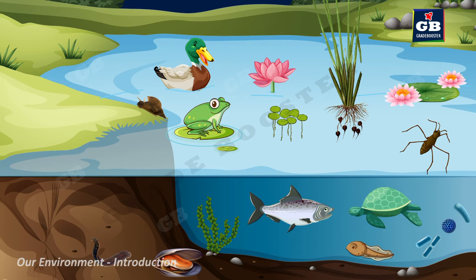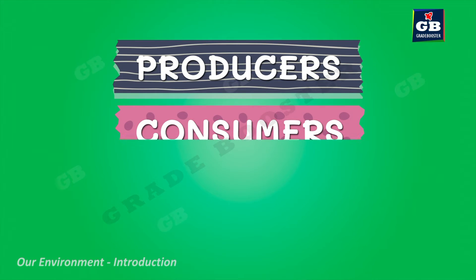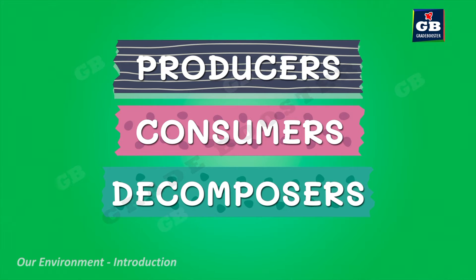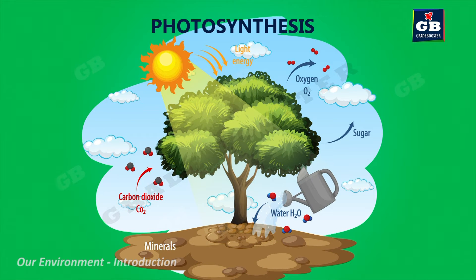The biotic components of an ecosystem are categorized into three types according to their mode of feeding: producers, consumers, and decomposers. Green plants and some bacteria carry out a process called photosynthesis and prepare their own food — they are called producers.